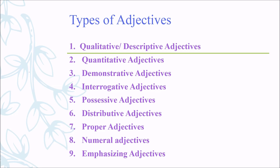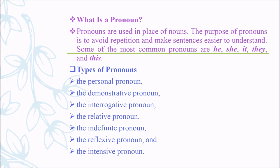Next, we are going to learn about pronouns and types of pronouns. Pronouns are used in place of nouns. The purpose of pronouns is to avoid repetition and make sentences easier to understand. Some of the most common pronouns are he, she, it, they, and this. Types of pronouns: personal, demonstrative, interrogative, relative, indefinite, reflexive, and intensive pronoun.